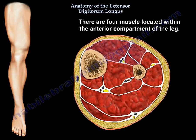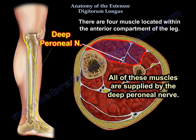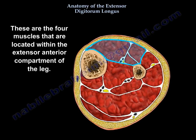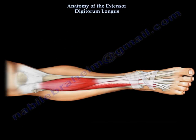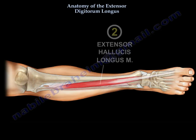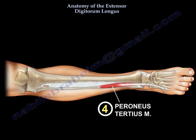There are four muscles in the anterior compartment of the leg, all supplied by the deep peroneal nerve, which is present within this anterior compartment. These four muscles are the tibialis anterior, the extensor hallucis longus, the extensor digitorum longus, and the peroneus tertius muscle.